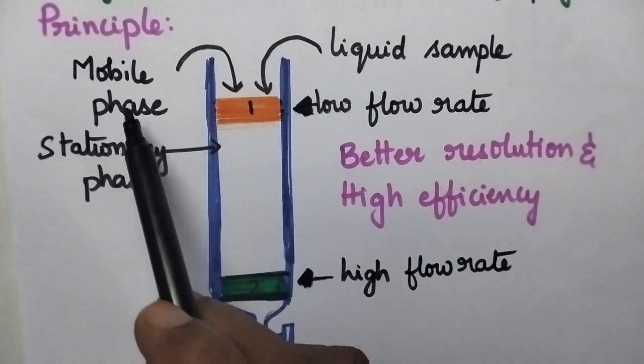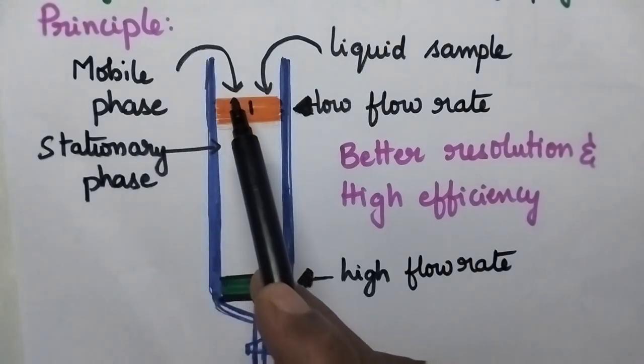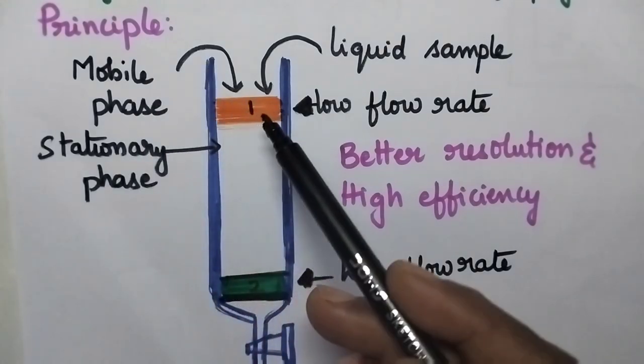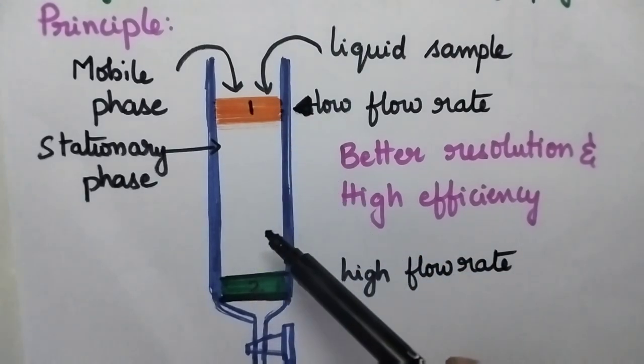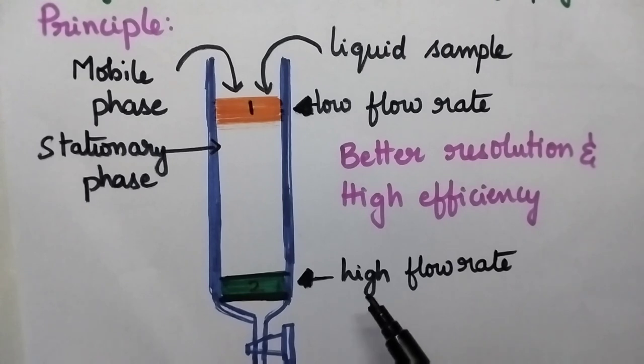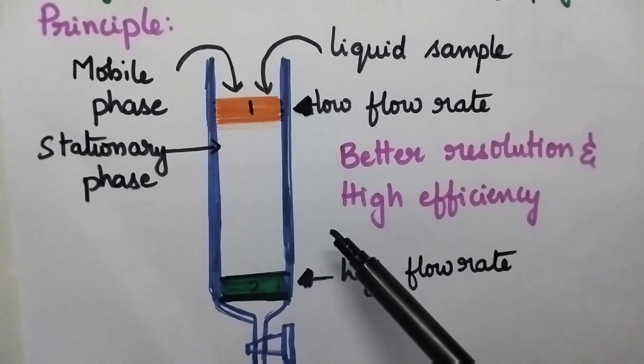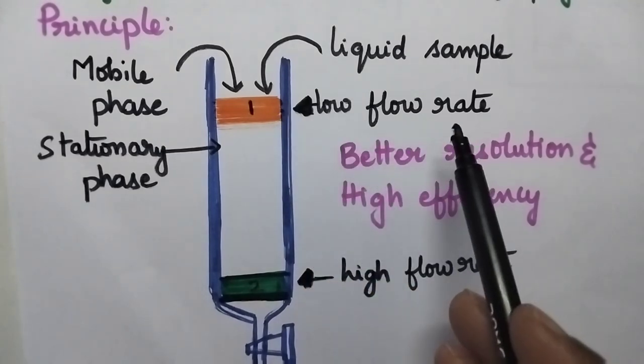When mobile phase is continuously injected into the column, because these components have different flow rates, the component with high flow rate will be eluted first from the column followed by the component with low flow rate.